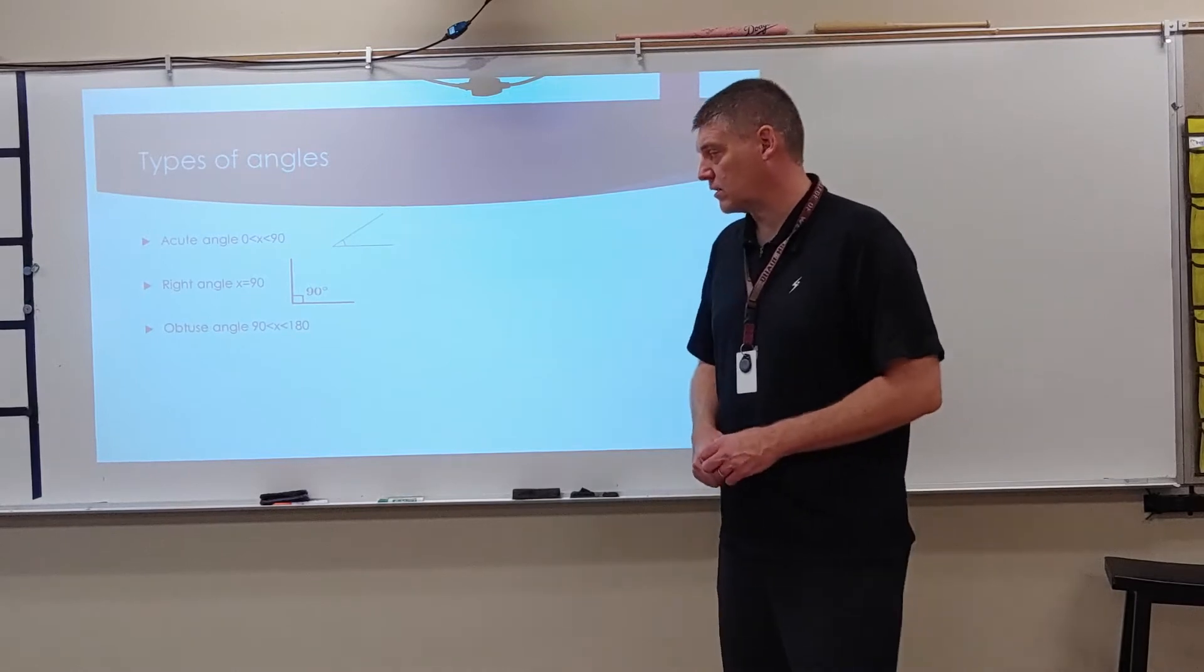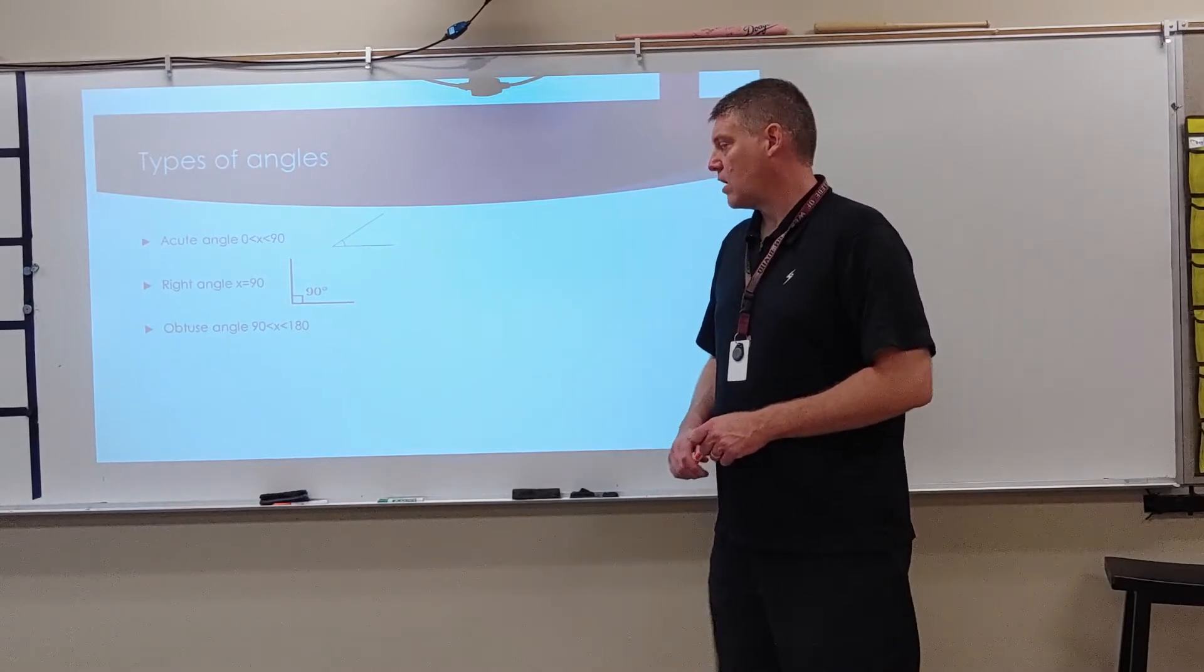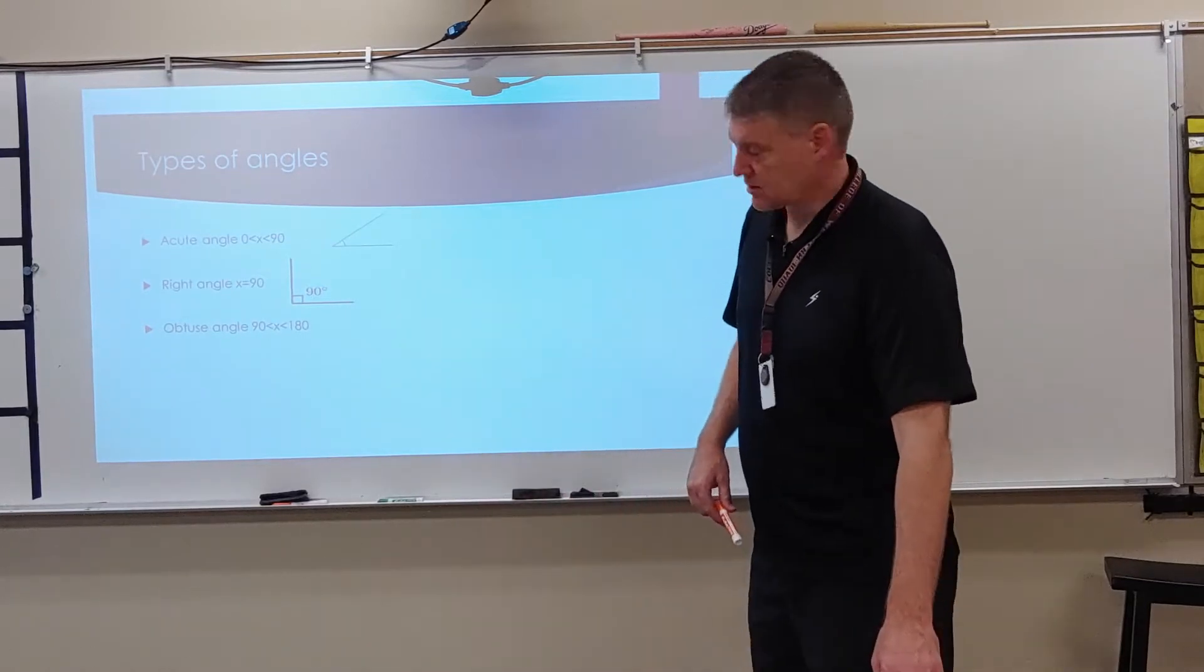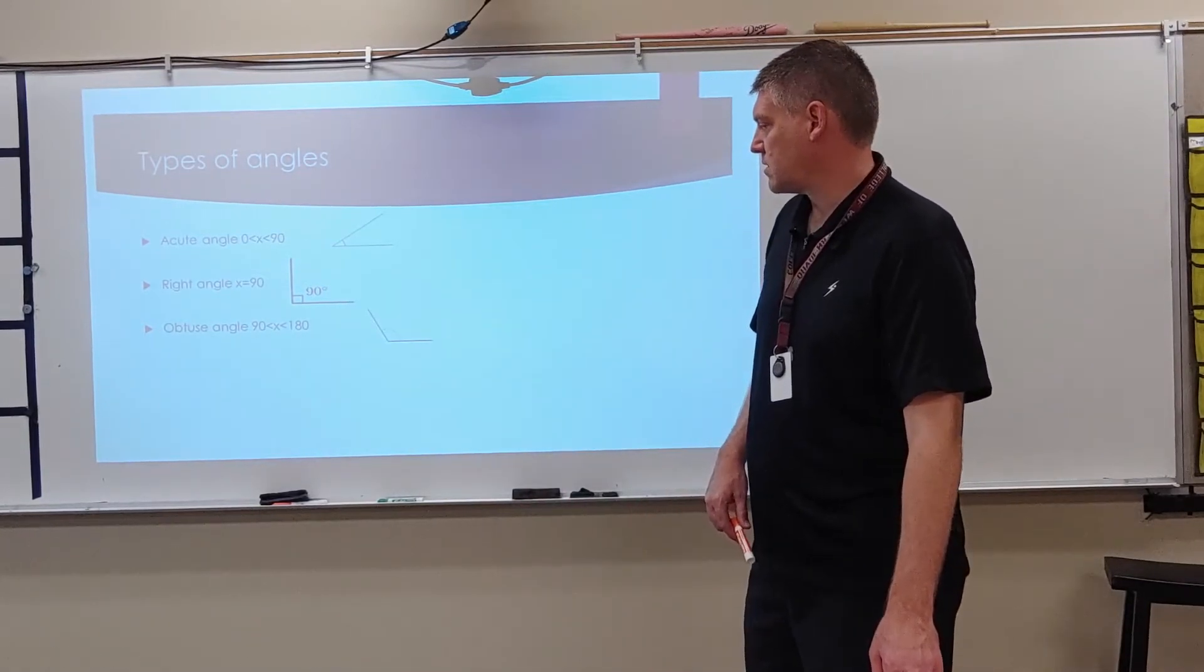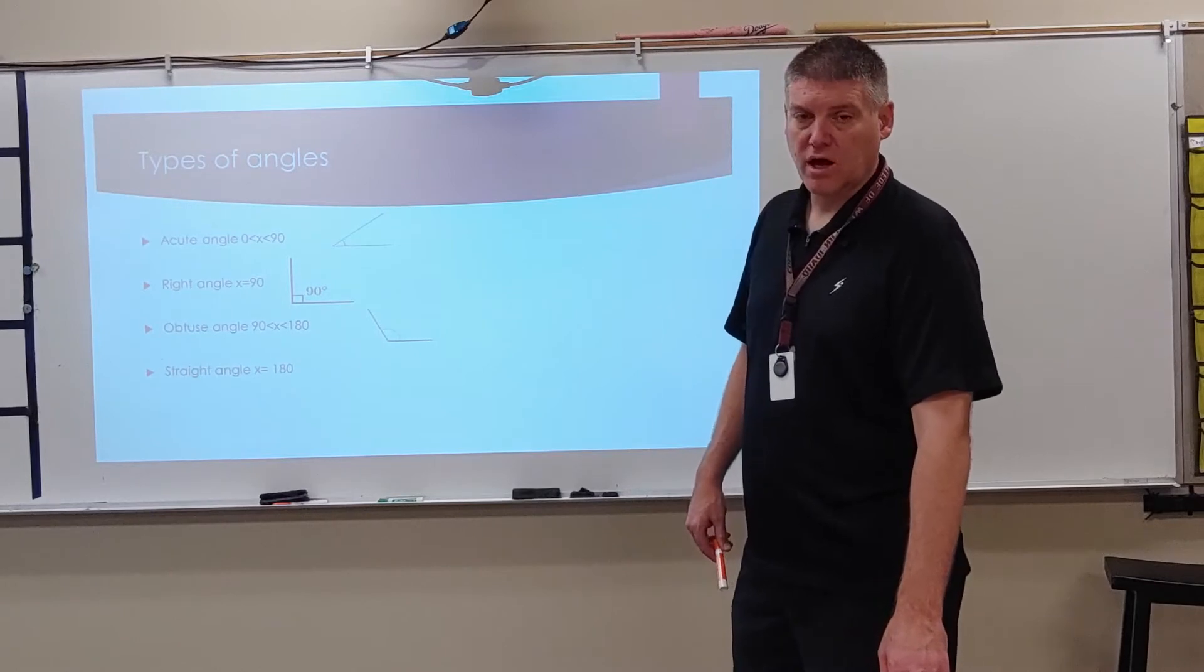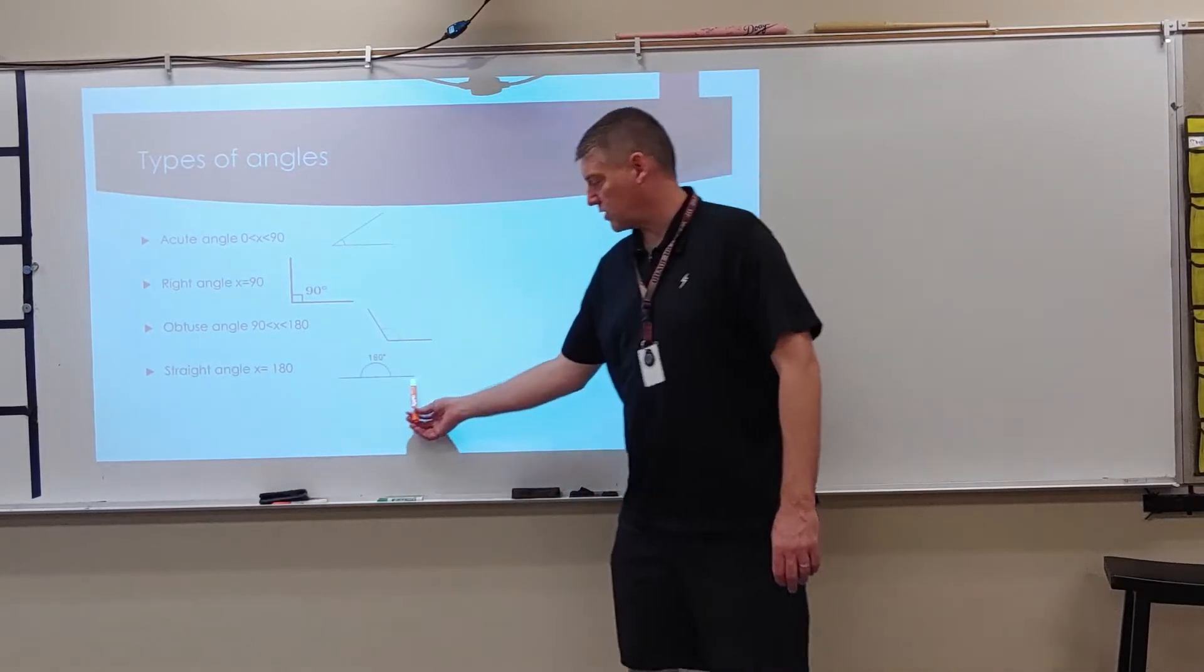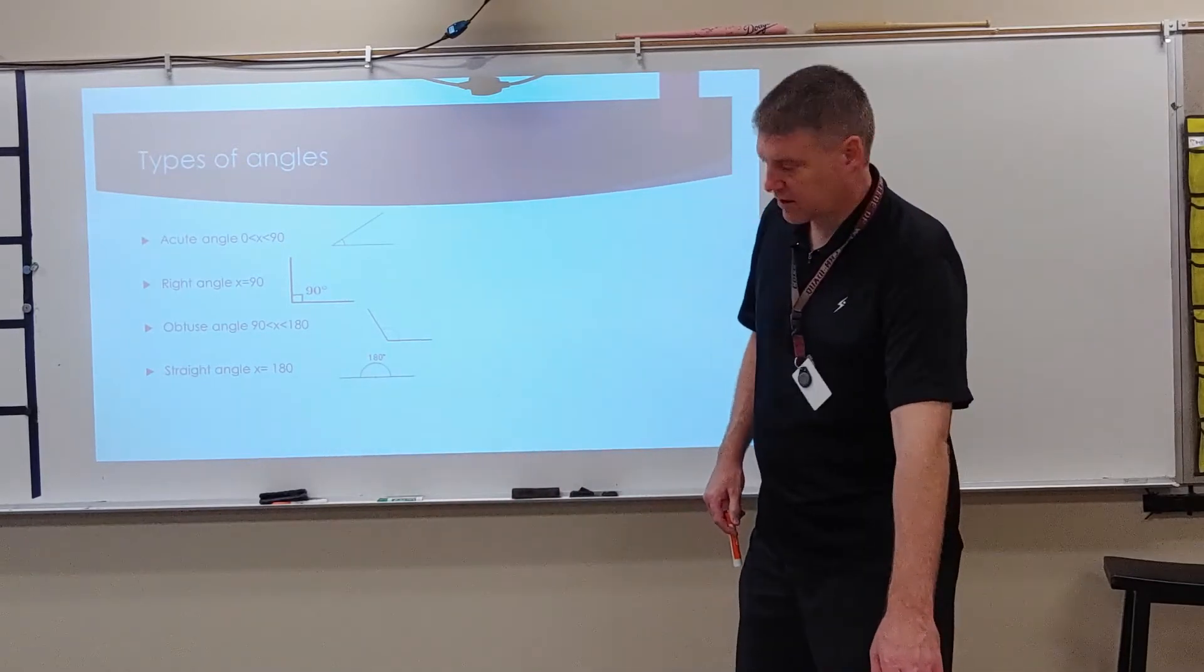An obtuse angle. Obtuse angles are greater than 90 but less than 180. Here's an example of an obtuse. And then we have a straight angle. A straight angle is an angle whose measurement is 180. So it creates a line. That's straight angle.